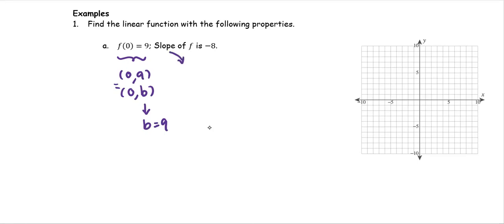The slope m of this function is -8. The linear function will be in the form f(x) = mx + b, so we obtain the function f(x) = -8x + 9.